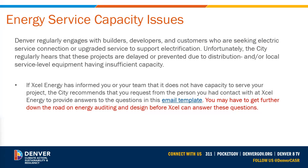For the Energize Denver building performance policy, energy service capacity constraints are a valid reason for timeline adjustments. For example, if you want to upgrade to heat pumps but don't have enough electrical capacity and it would be extremely expensive to add it, we don't want you to do that. If Xcel Energy has informed you that they do not have capacity to serve your project, the city recommends requesting that your Xcel Energy contact provide answers to questions in an email template found on the program website's timeline adjustment page. You may need to get further along in energy auditing and design before Xcel can answer these questions.